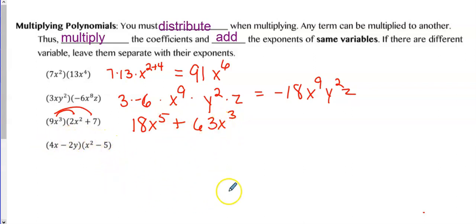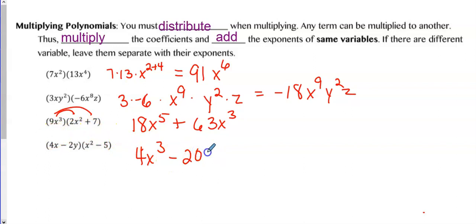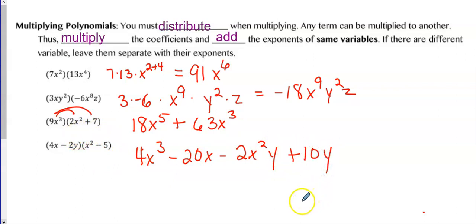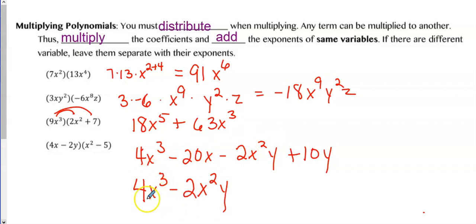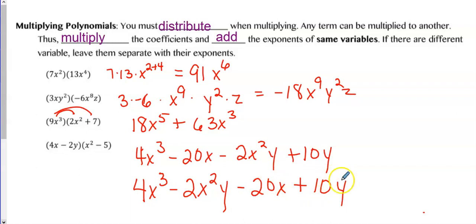When multiplying two binomials, you can use the box method or FOIL — whatever works for you. Using FOIL: the first terms give 4X cubed, the outside terms give minus 20X, the inside terms give minus 2X squared Y, and the last terms give plus 10Y. There are no like terms to combine here, but if writing in standard form you would switch some terms so the highest degree comes first — X cubed, then X squared.